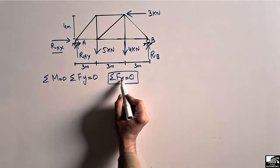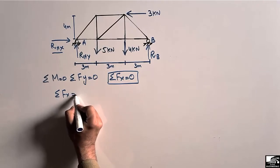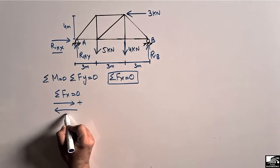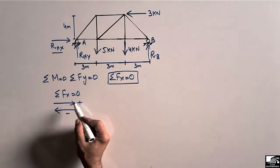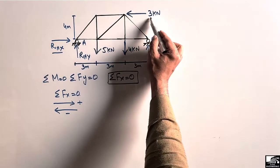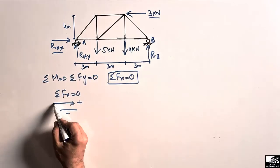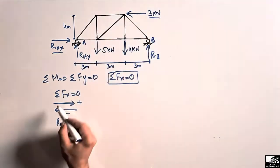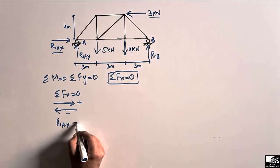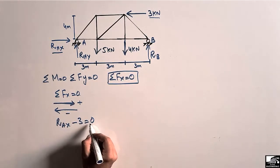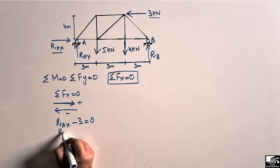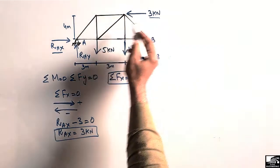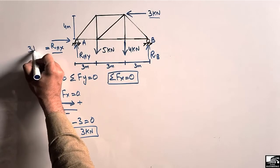Taking rightward as positive and leftward as negative, the horizontal equilibrium gives: R_AX minus 3 kN equals zero. Shifting to the right side, R_AX equals 3 kN. The entire horizontal load is carried by support A as its horizontal reaction.